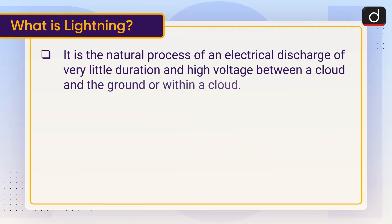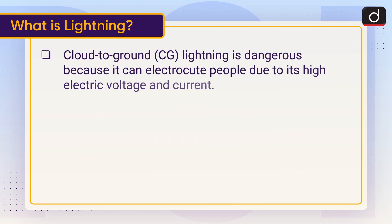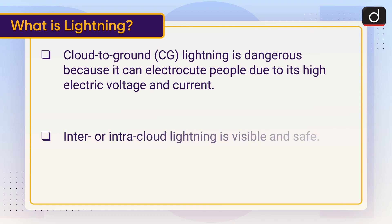Lightning is the natural process of an electrical discharge of very little duration and high voltage between a cloud and the ground, or within a cloud. It is accompanied by a bright flash, a loud sound, and occasional thunderstorms. Cloud-to-ground (CG) lightning is dangerous because it can electrocute people due to its high electric voltage and current. Inter or intra-cloud lightning is visible and safe.